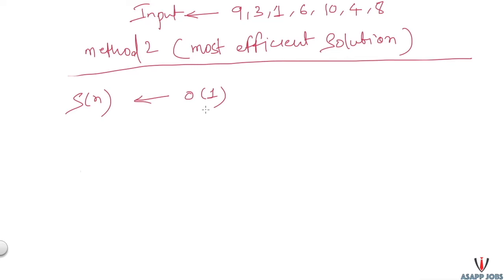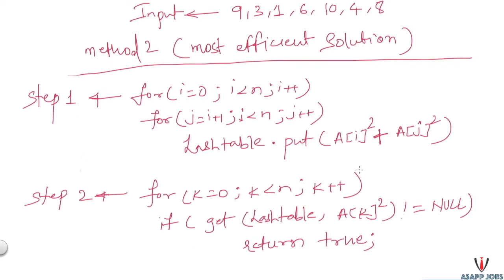One important point: we are modifying the input array. If the interviewer says the array is read-only, we can still solve it in O(n²) time but with extra memory. In that alternative approach, step one uses a hash table where we store all a[i]² + a[j]² values. In step two, we look up each a[k]² in the hash table. If a non-null value is found, we have found our triplet and return true.